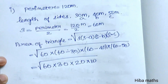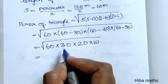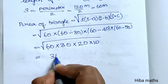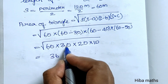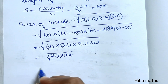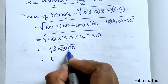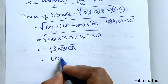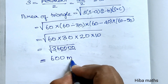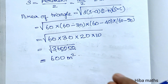Multiplying: 3 × 6 = 18, 18 × 2 = 36, giving 36 with zeros. The square root of 360,000 equals 600 square meters. So the area of the first plot is 600 square meters.